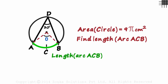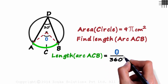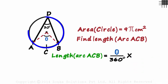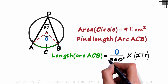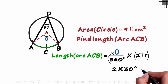The length of arc ACB equals theta over 360 degrees, times the circumference 2πr. Theta is the central angle of arc ACB, which is subtended by the inscribed angle of 30 degrees. Since the inscribed angle is half the central angle, 30 degrees is half of theta, so theta equals 2 times 30 degrees, which is 60 degrees.